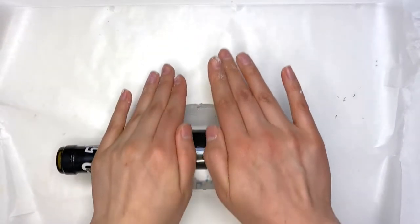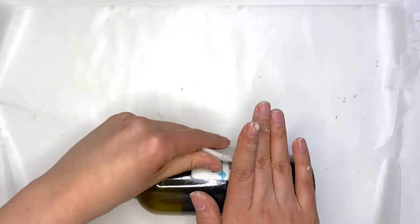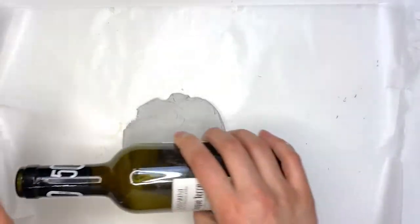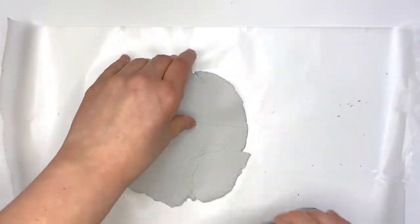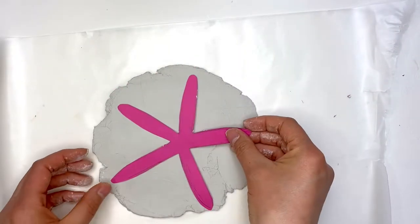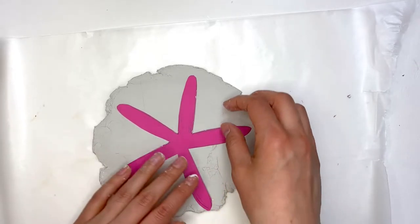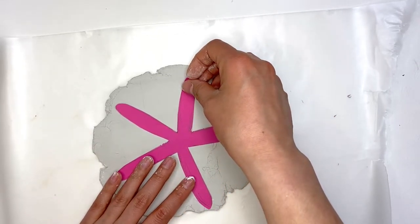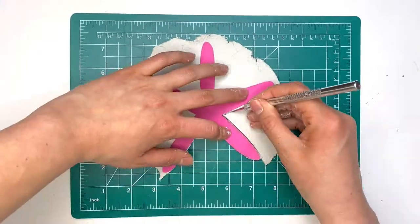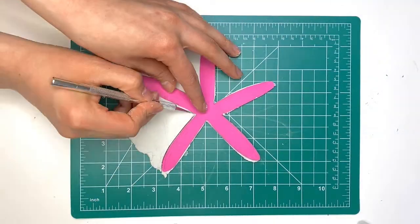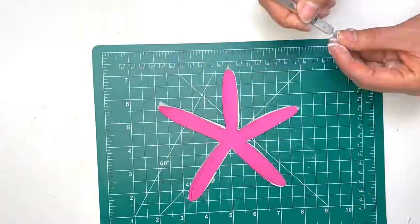Then I used some air dry clay and I used a wine bottle to roll it out flat. Once you've rolled out your air dry clay to the size that you need, you're going to put your starfish template on top of it and then you're going to carefully cut around your template using an exacto knife.